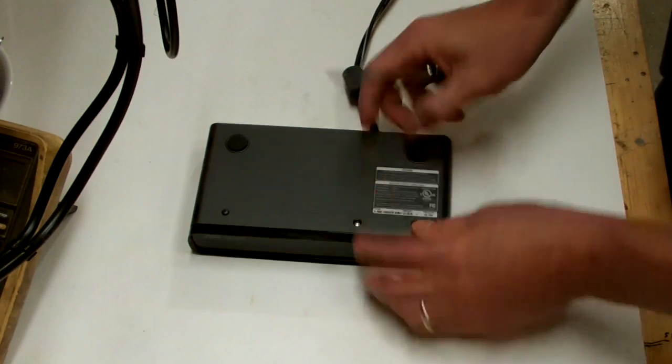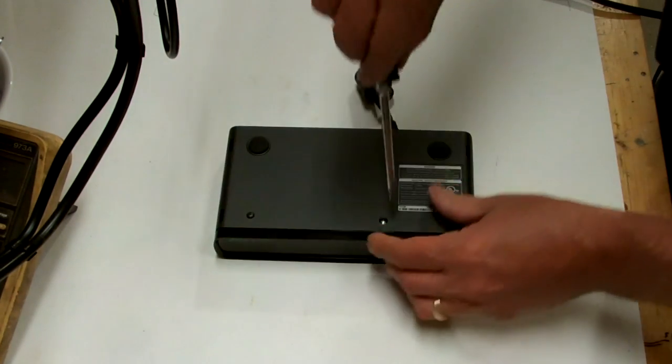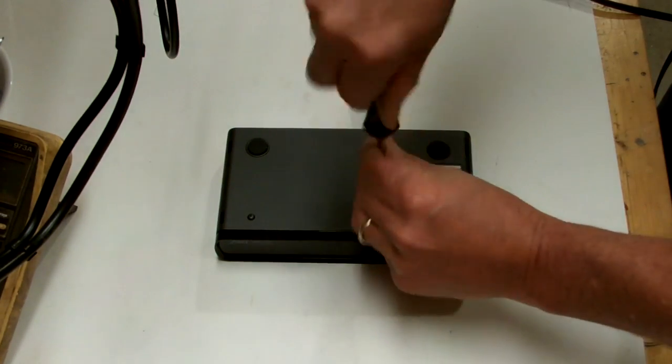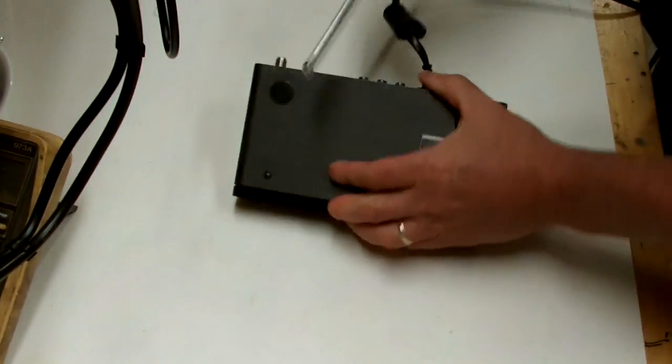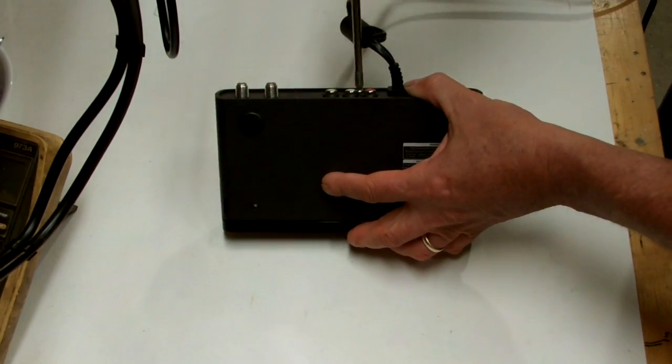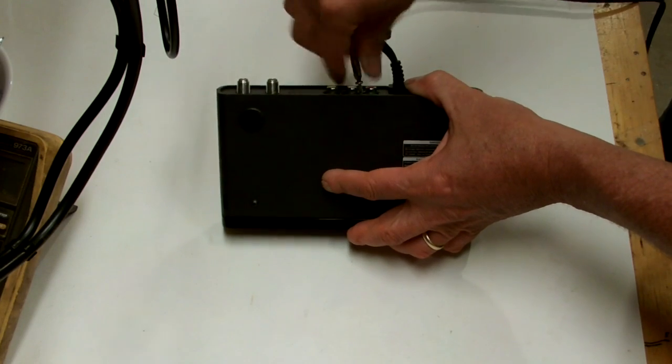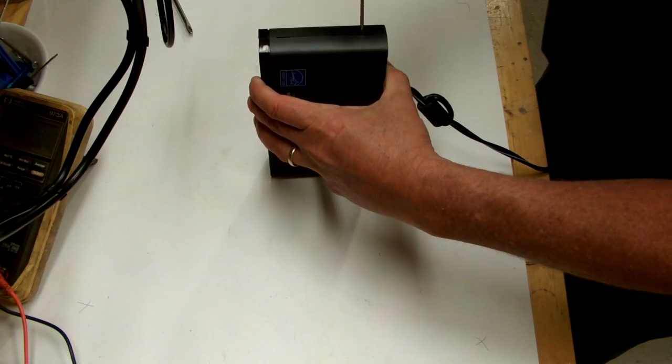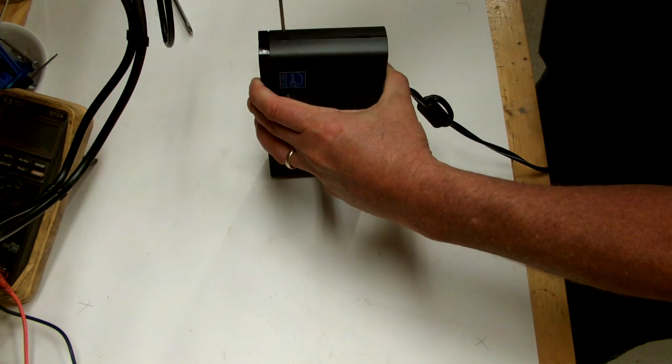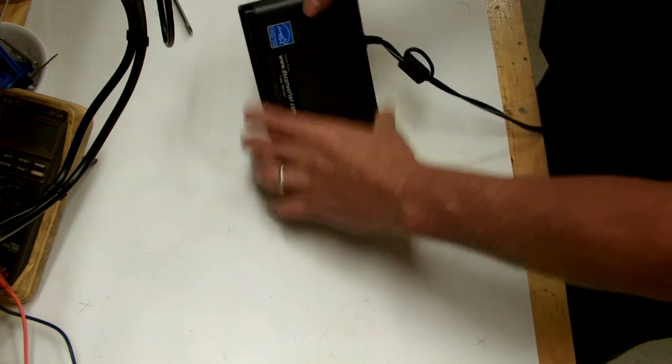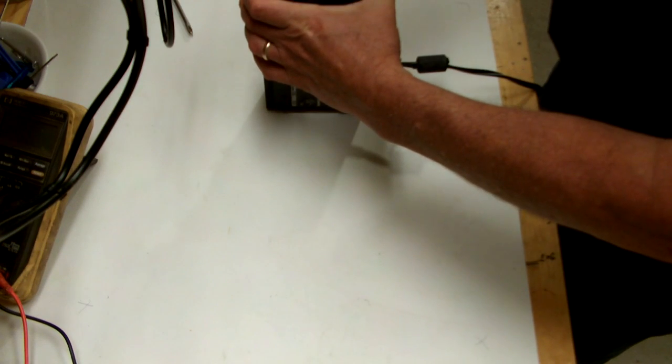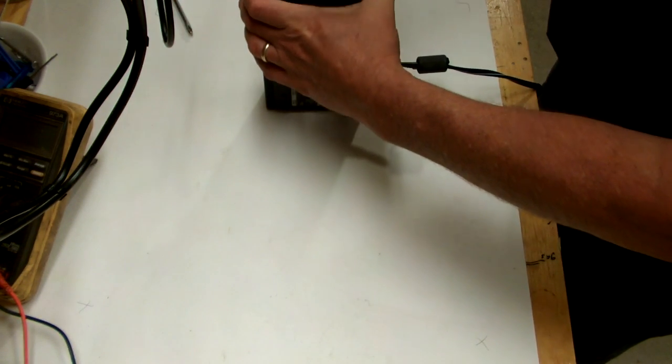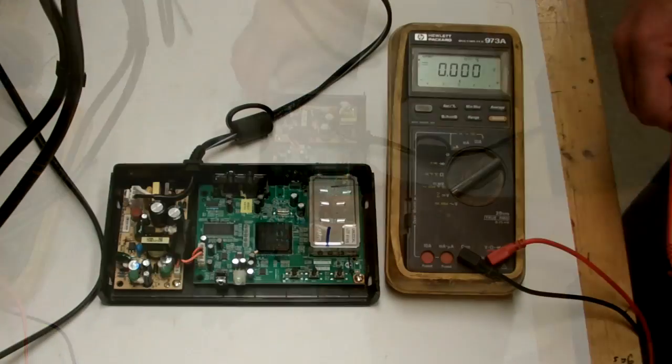So there's two screws on here. There's one here and there's one here. We're going to pull those out quick. Then to get inside our box, we're just going to take a little screwdriver, give it a little press there. Then our box is going to open up.